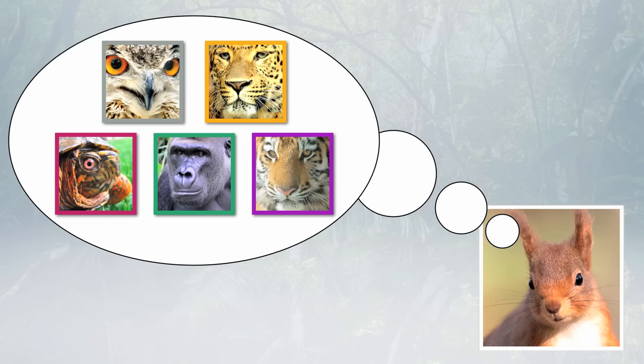There are five candidates running for king: two members of the big parties, Gorilla and Leopard, and three other candidates, Turtle, Owl, and Tiger.